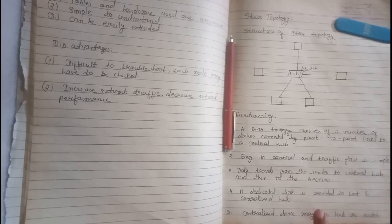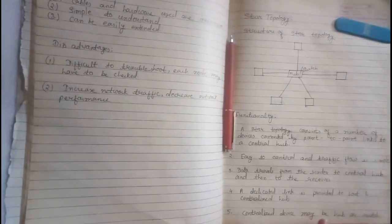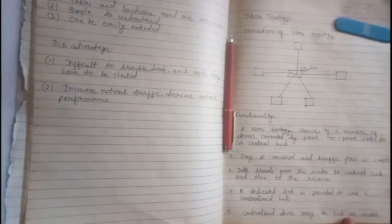A dedicated link is provided to host and centralized hub. It is point-to-point connection. This means there is dedicated link is available. Centralized device may be hub or switch.